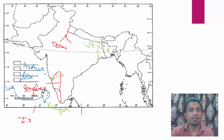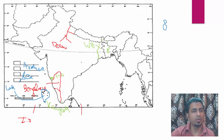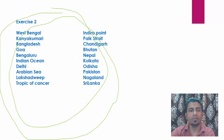Now next is Tropic of Cancer — it is very visible and it is written on the map as well. It goes through Gujarat, then Madhya Pradesh, Chhattisgarh, West Bengal, Jharkhand, Tripura, Mizoram, and Odisha — so it goes through eight states and you have to know all of them. Please write in the comment section the names of the eight states through which Tropic of Cancer passes. This is at 23 and a half degrees — you should know this coordinate or latitude. This is 23.5° — the Tropic of Cancer.